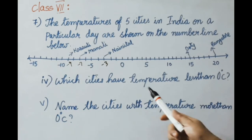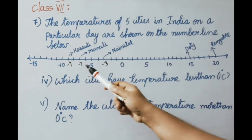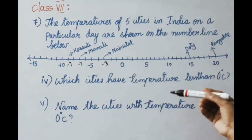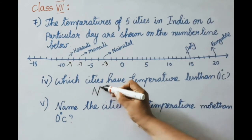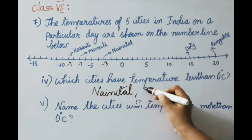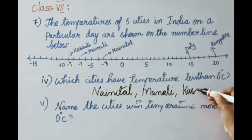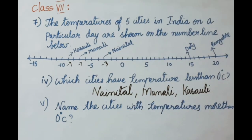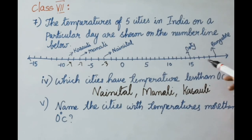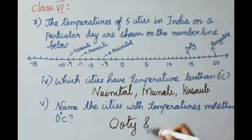See the fourth question: which cities have a temperature less than 0 degrees Celsius? On the number line, below 0 there are three cities: Nanital, Manali, and Kazoli. See the fifth question: name the cities with temperatures more than 0 degrees Celsius. Above 0 on the number line are Uti and Bangalore.